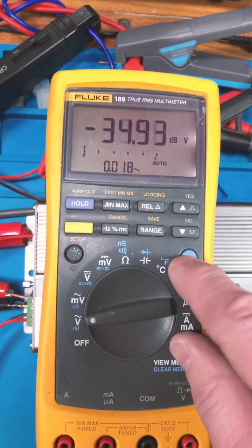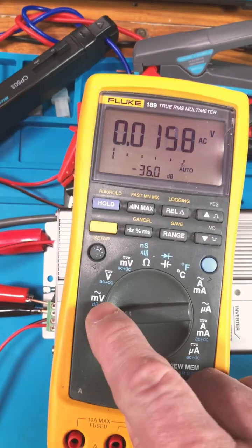It gives you AC decibels, hit it again, switches around, decibels AC. You have it in millivolts as well.